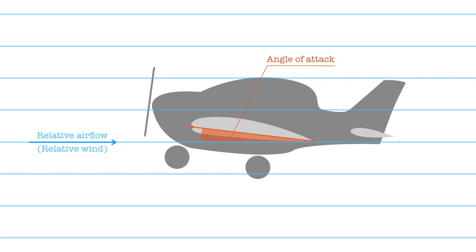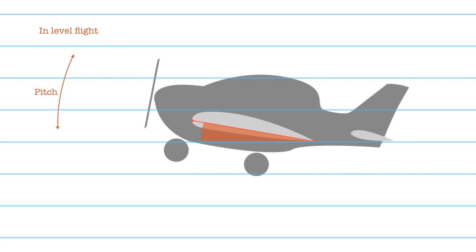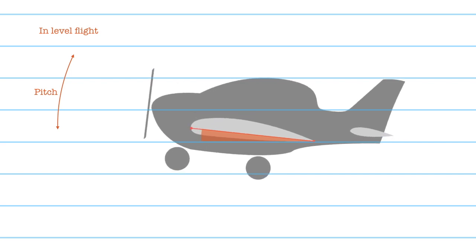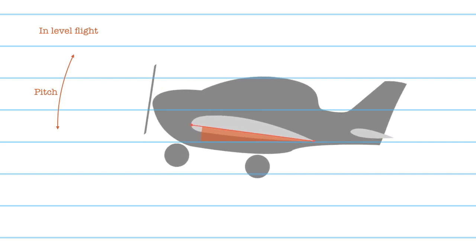The angle of attack changes as the attitude of the aeroplane changes. For example, the angle of attack changes if the aeroplane pitches up and down in level flight.